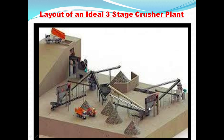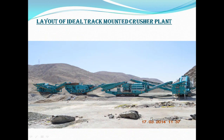From here it goes to the screen, and then we get different fragments. Now I'll show you the other layout for the track-mounted crushing plant. This is the primary stage where the hopper is, and this is the jaw crusher. This is the hopper for the secondary crusher — this is the cone crusher. Here it goes to the screen stage, and from there to the cone crusher, and then to the screen where different fragments are produced.